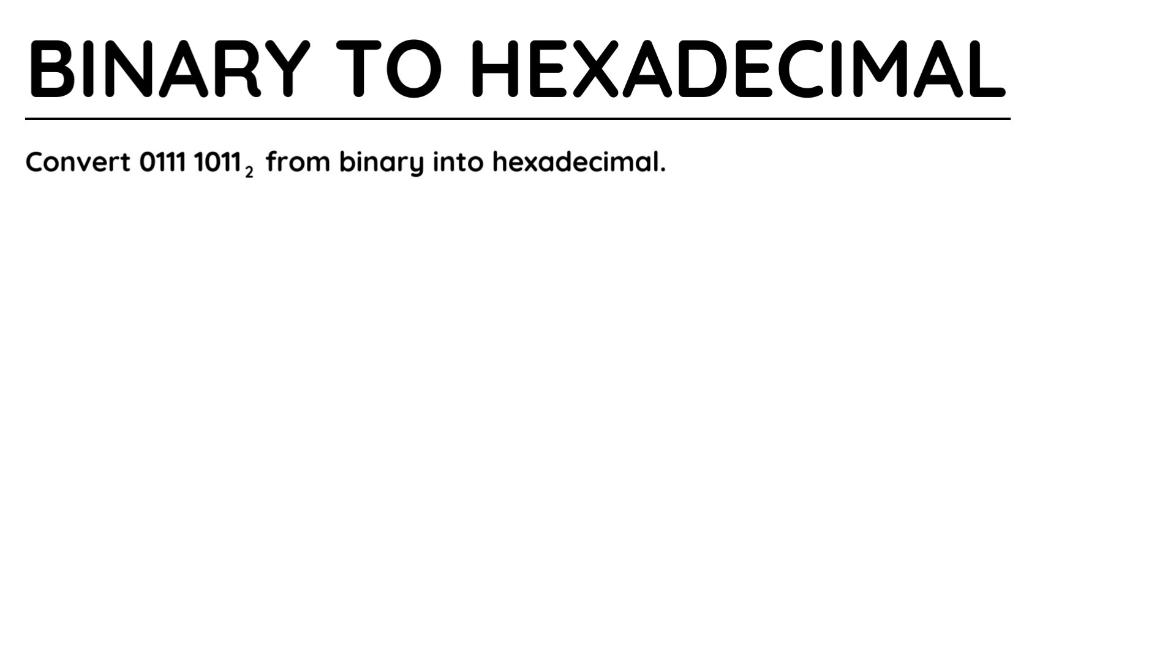For EDUCAS and WJEC GCSE students, there's a small number placed next to a value to represent its base. You can see in the question the number 2. This indicates that it is a base 2 number, which is binary, and refers to the number of values that it can represent, just 0 and 1.